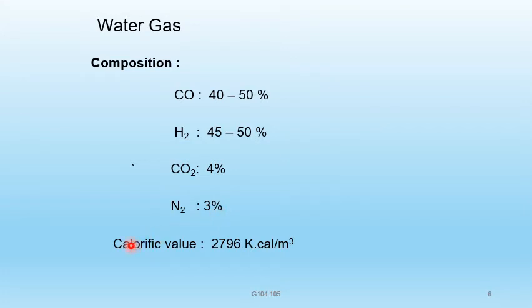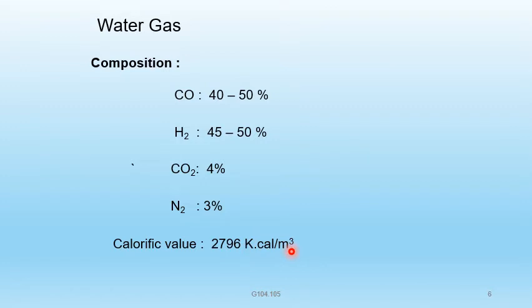The calorific value of water gas is 2796 kilocalories per meter cube. This is the amount of heat energy liberated by the combustion of unit weight or volume of water gas.